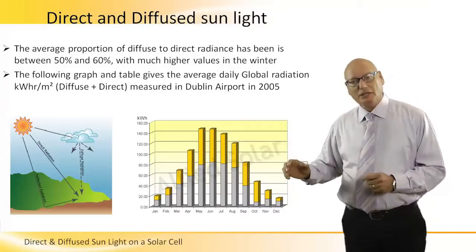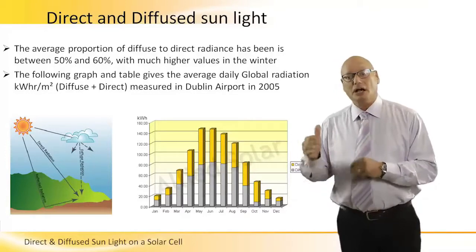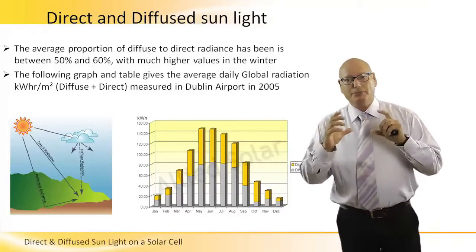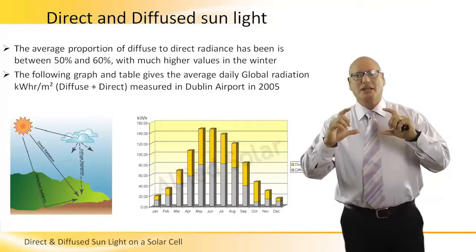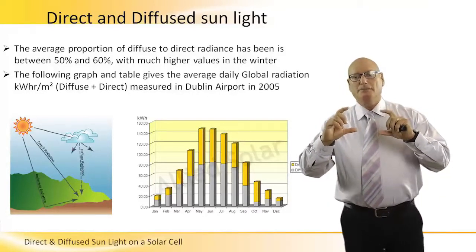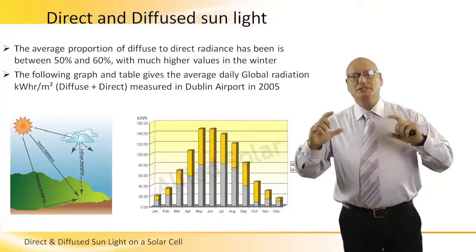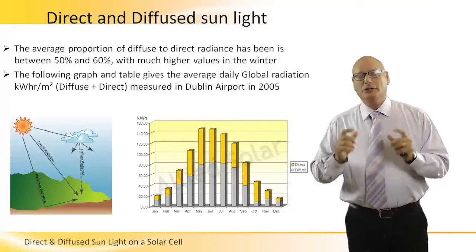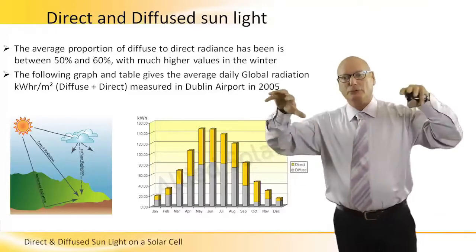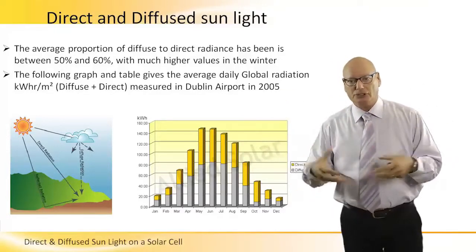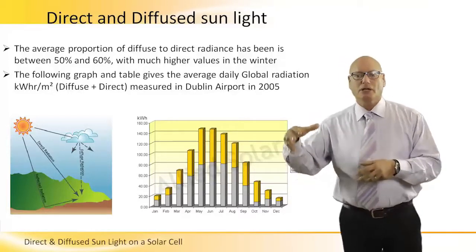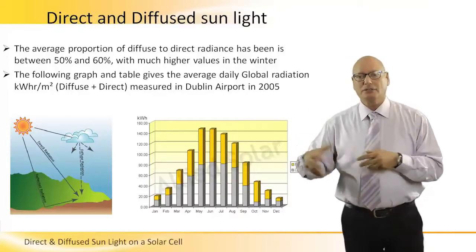We can see that the diffused is higher than the direct. Because if a PV cell stands as a passive component looking at the sun, there is more light coming not directly from the sun itself, but from different directions — mountains, houses, clouds, et cetera.